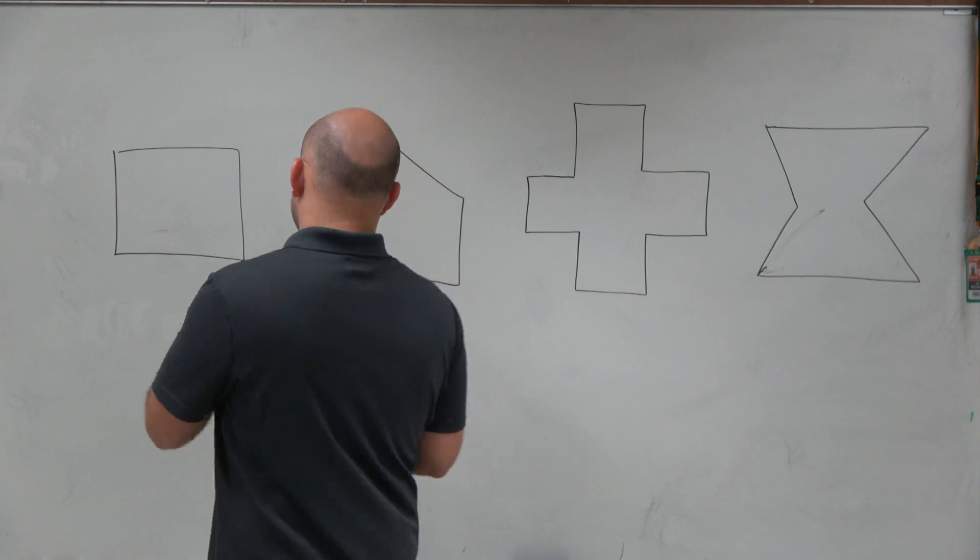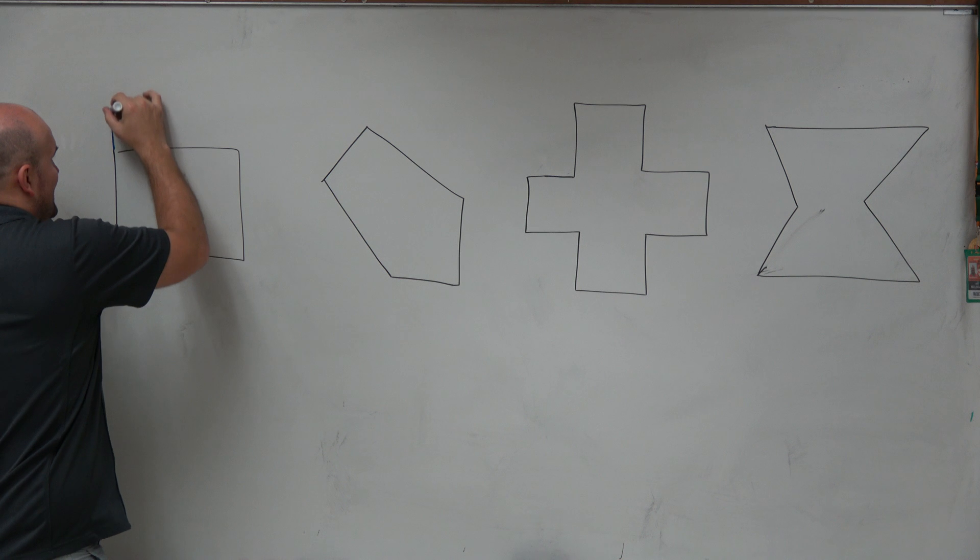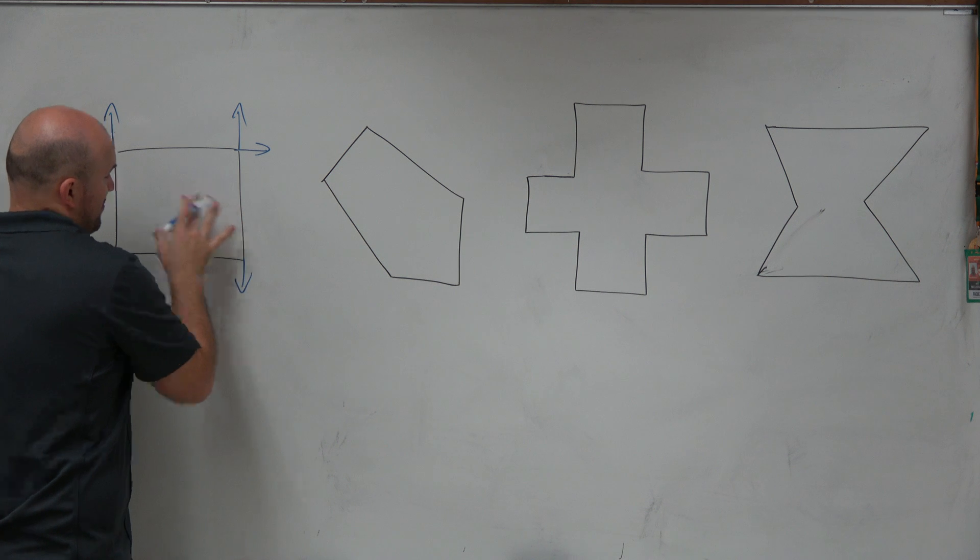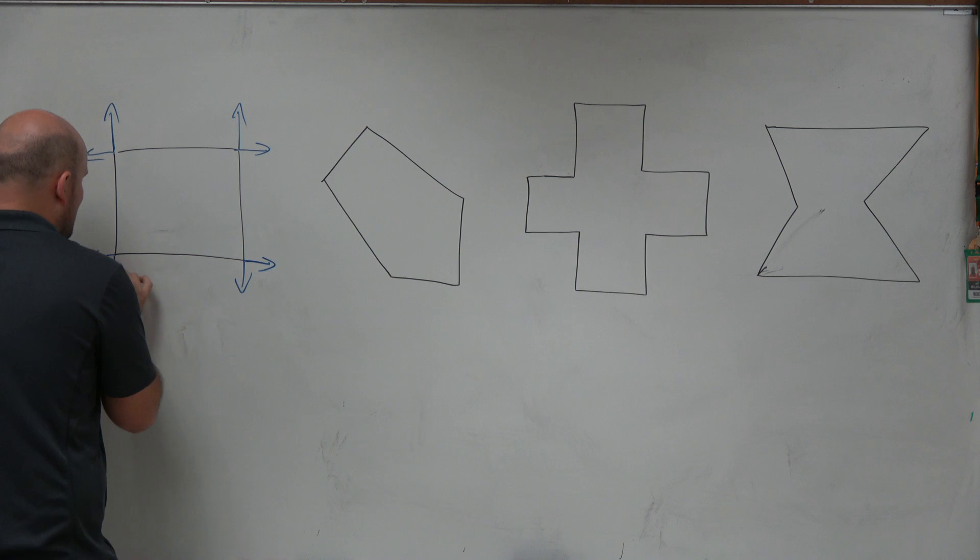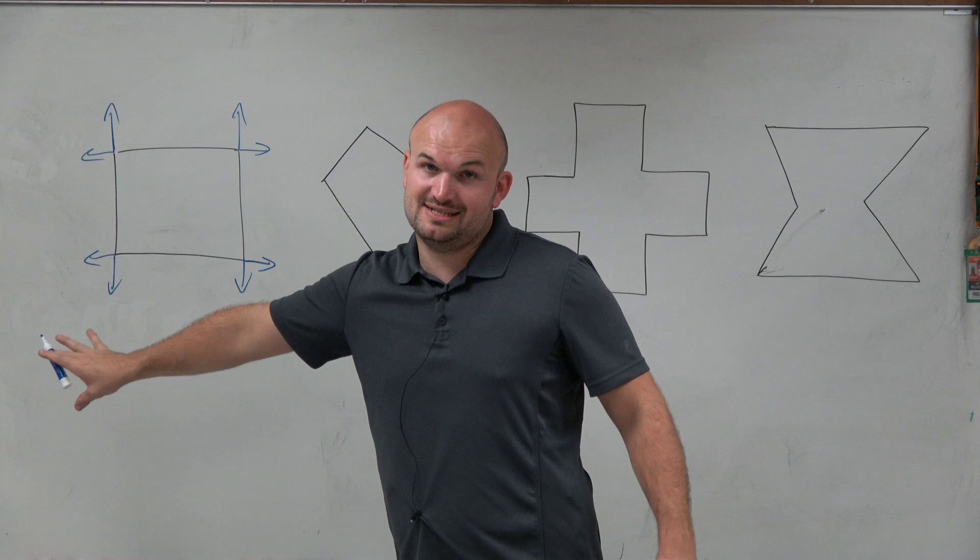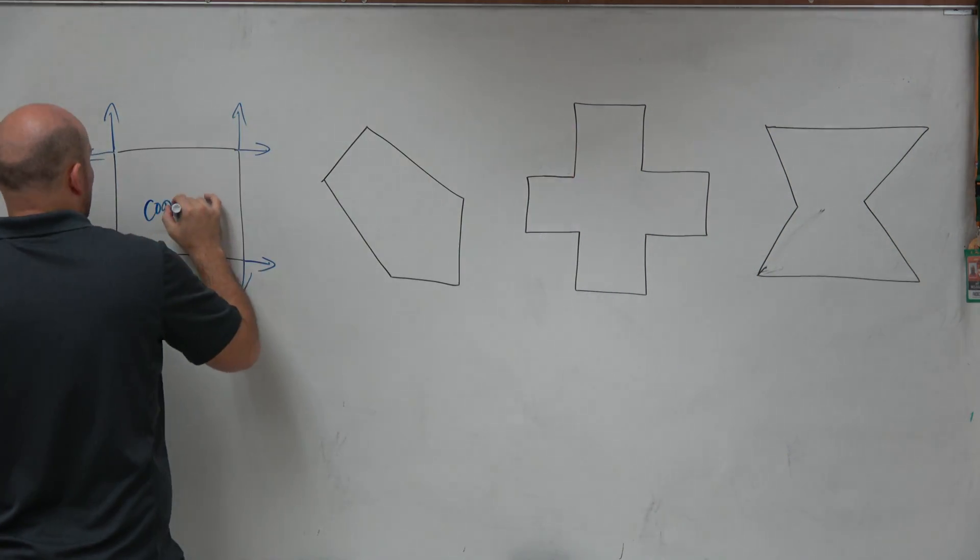So basically the best way to be able to determine if something's concave or convex is just to take every side of the polygon and extend it. If any of the extensions of the sides enter inside the polygon, then you'll have a concave polygon. But since you can see the exterior of all these sides do not enter inside the polygon, this is what we call convex.